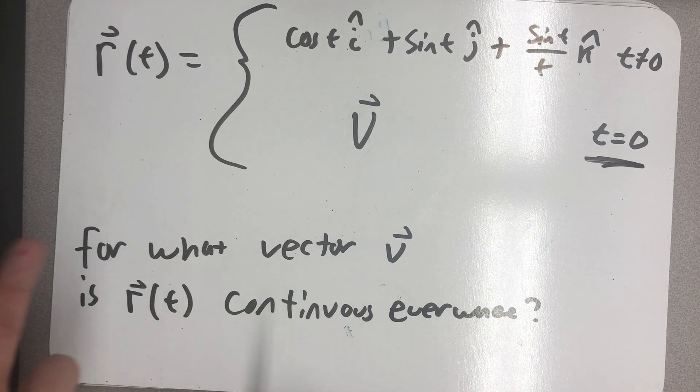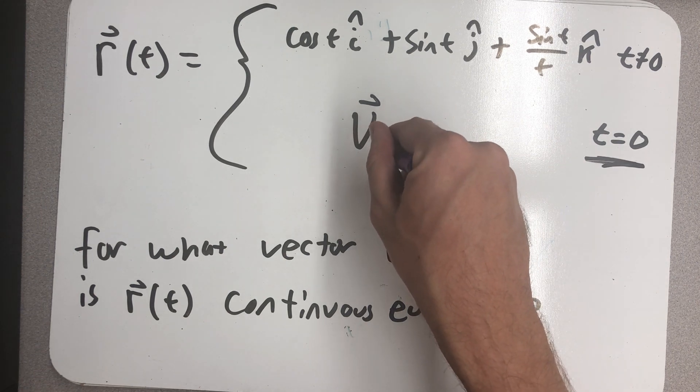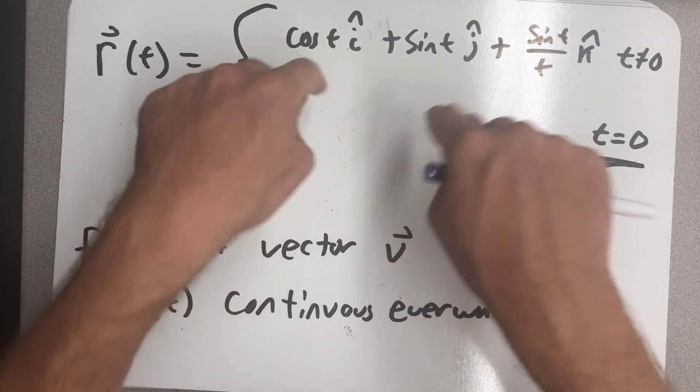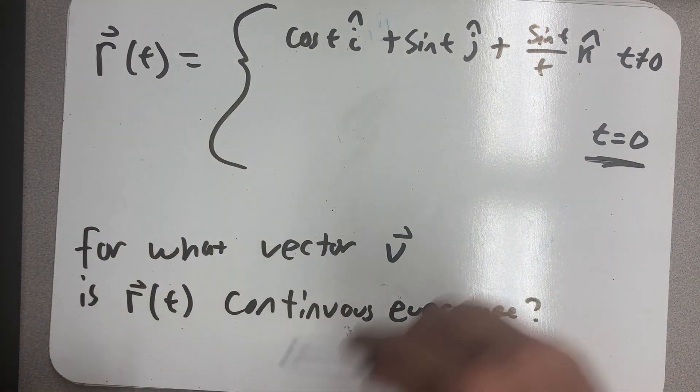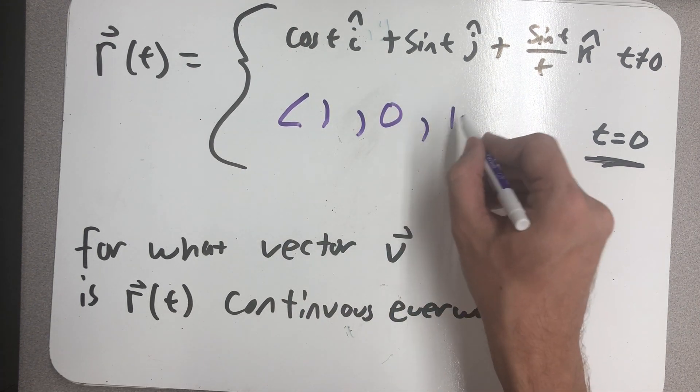Well, I need the function value, whatever I'm going to write down for v, to match the limit as t approaches zero. So I take the limit as t approaches zero, and that's what I have to write down here. And so I need this vector v to be one, zero, one.